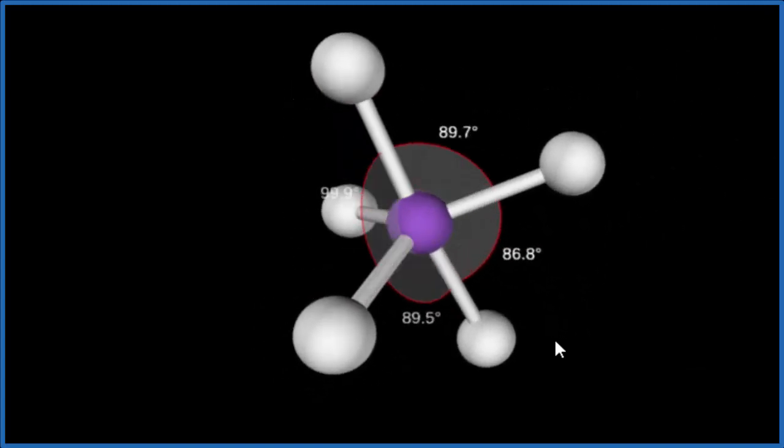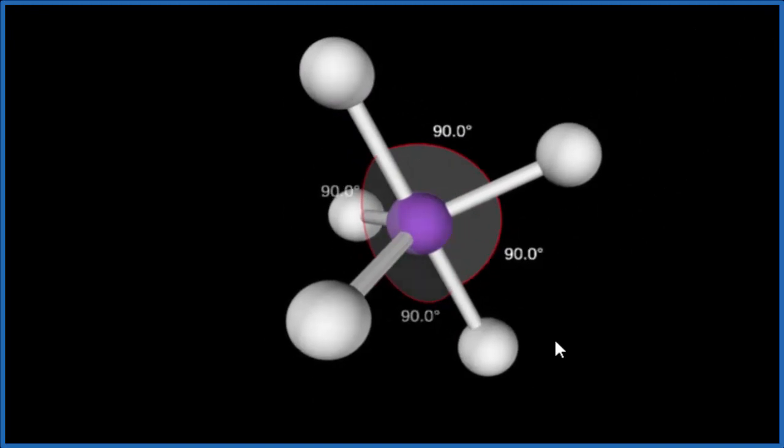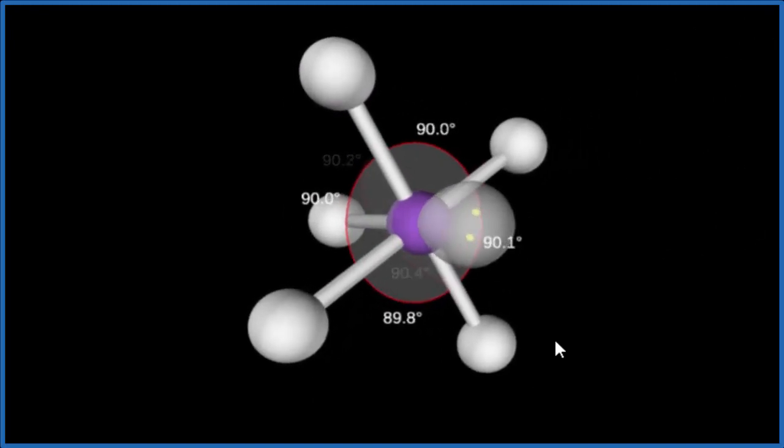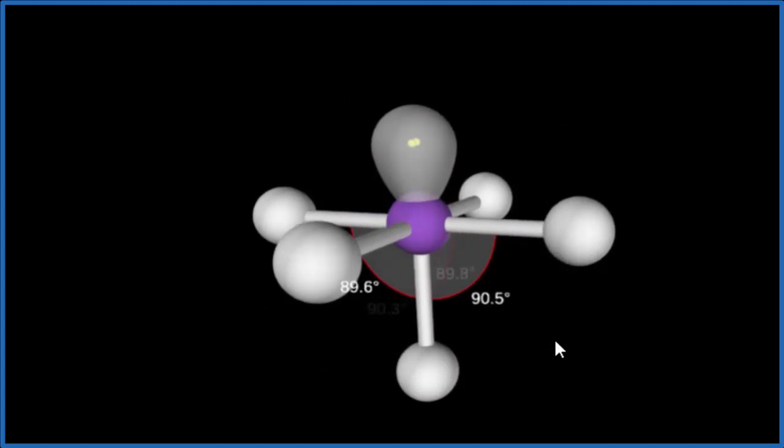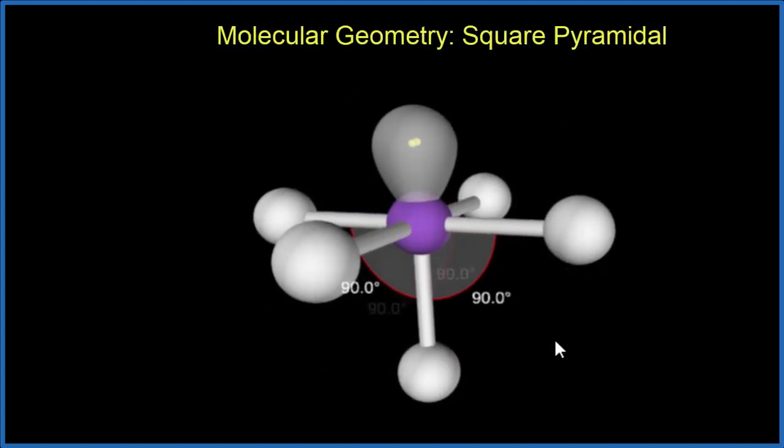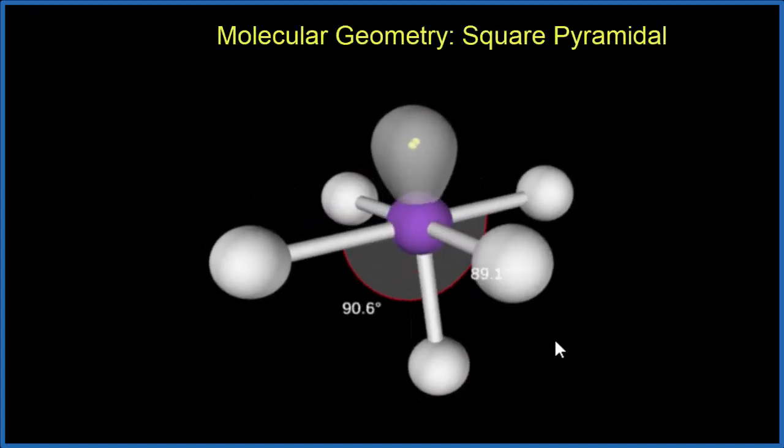So we have this structure here, but we need to remember that lone pair. So let's put that lone pair in here, and now we have our molecular geometry, which is that square pyramidal we talked about earlier.